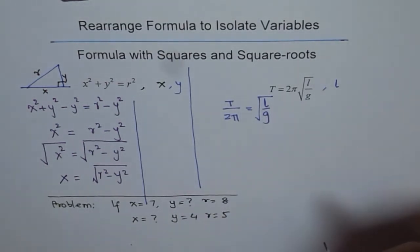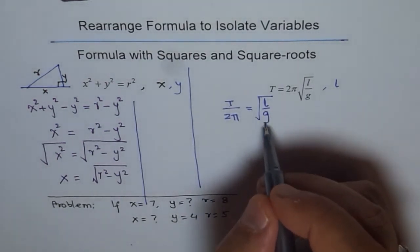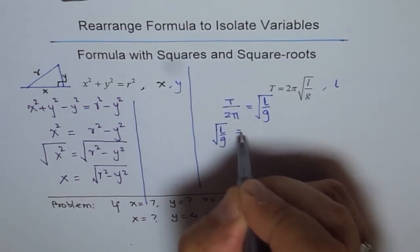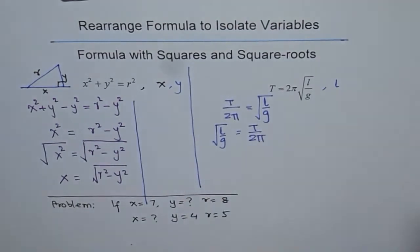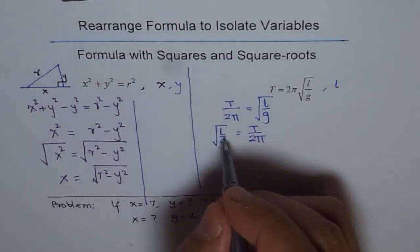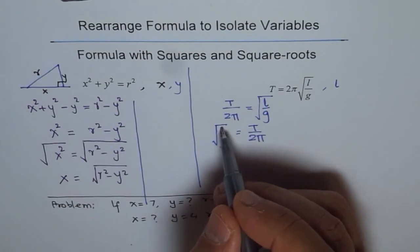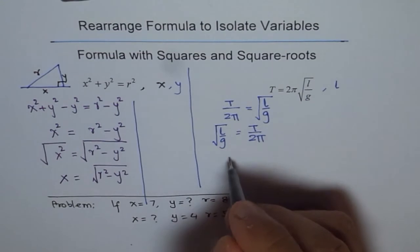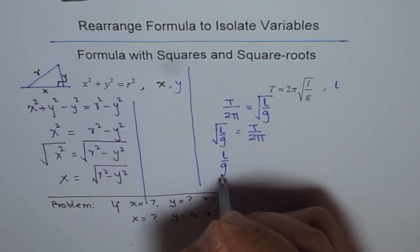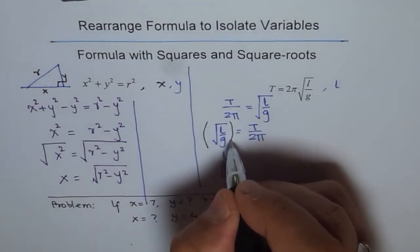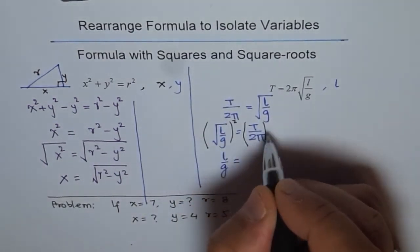So, we want to find what l is. Now, this is equality. We can always write this on the left side. So, we can write this as l over g equals to T over 2π. Now, to find l, what we can do? We can square now both sides. So, let us square both sides. If you square both sides, then square of a square root will be the number inside or the variable inside. So, that would be l over g equals to and squaring this. So, what we are doing here is we are squaring both sides. Square this and square this.